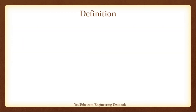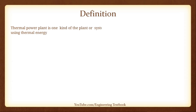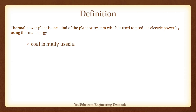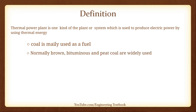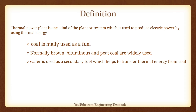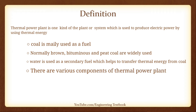The definition of thermal power plant. A thermal power plant is a system which is used to produce electrical power by using thermal energy. Coal is mainly used as fuel — normally brown, bituminous, and pit coal are widely used. Water is used as a secondary fluid which helps to transfer thermal energy from coal. There are various components of thermal power plants.